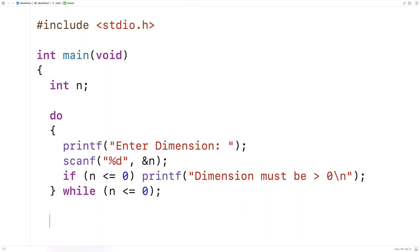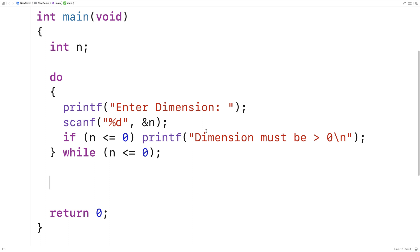Now that we have a dimension that is one or greater, the first thing we're going to do is output the column headings of our multiplication table. The top left corner of multiplication tables tends to have an x for multiplication. I'll put that here with printf.